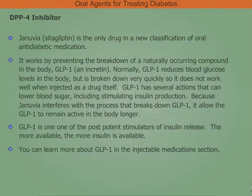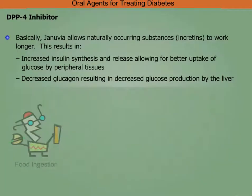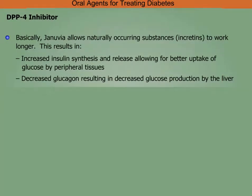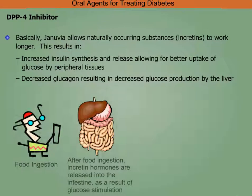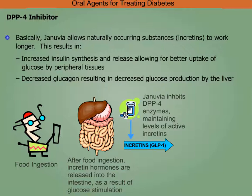Basically, Januvia allows naturally occurring substances to work longer. This results in increased insulin synthesis and release, allowing for better uptake of glucose by peripheral tissues, and decreased glucagon resulting in decreased glucose production by the liver. After food ingestion, incretin hormones are released into the intestine as a result of glucose stimulation. Januvia inhibits DPP-4 enzymes, maintaining levels of active incretins.